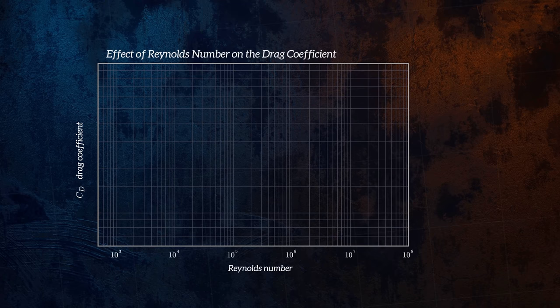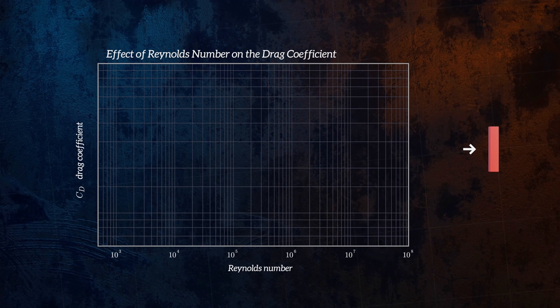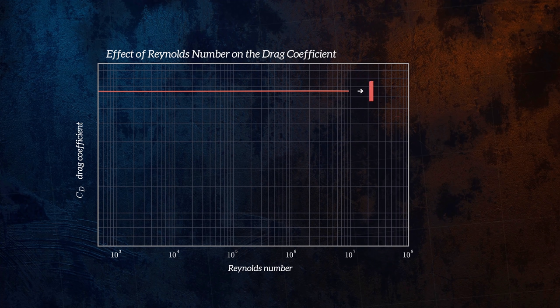For a flat plate oriented at 90 degrees to the flow, the drag coefficient doesn't vary significantly with Reynolds number, because flow separation will always occur at the edge of the plate, and so, although it is a blunt body, it isn't affected by whether flow is laminar or turbulent.